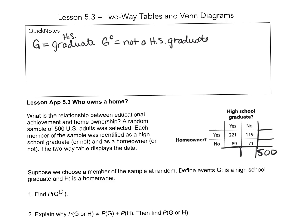Okay, so it's important we understand the notation. G is being a graduate, G complement is not being a high school graduate.